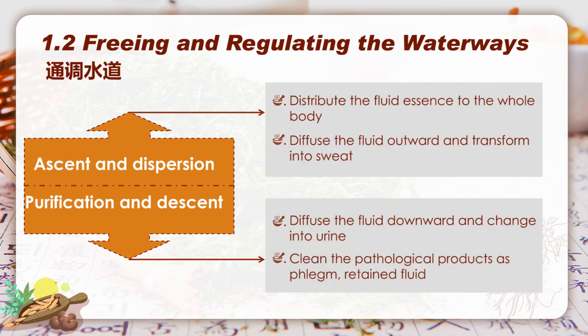For the specific procedure of its water regulating function, through ascent and dispersion, lung distributes the fluid essence to the whole body and diffuses the fluid outward to transform into sweat. By purification and descent, lung diffuses the fluid downward to change into urine, and cleans pathological products such as phlegm and retained fluid.